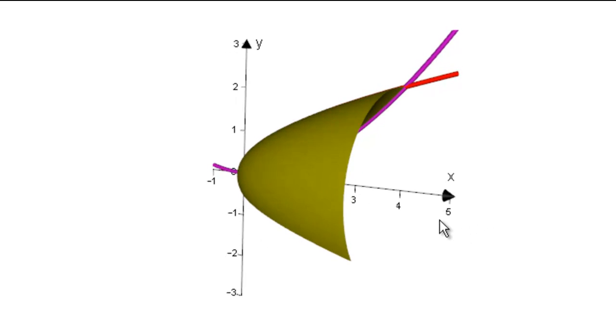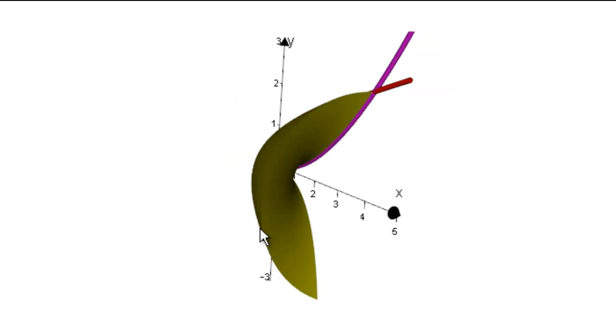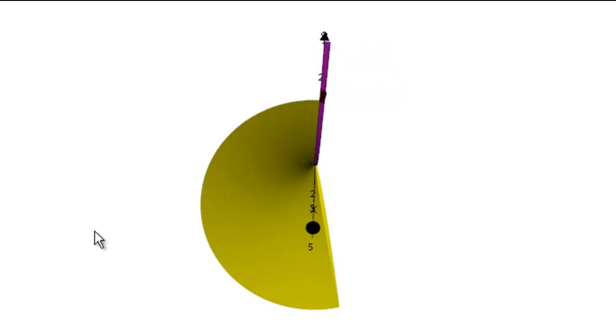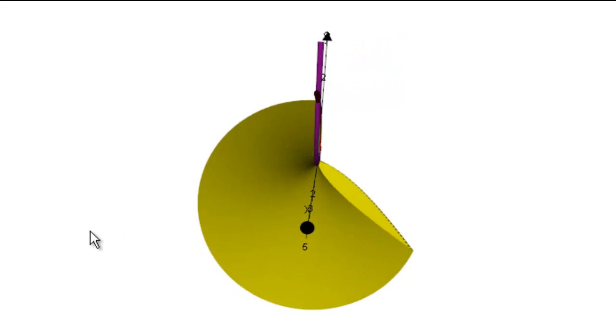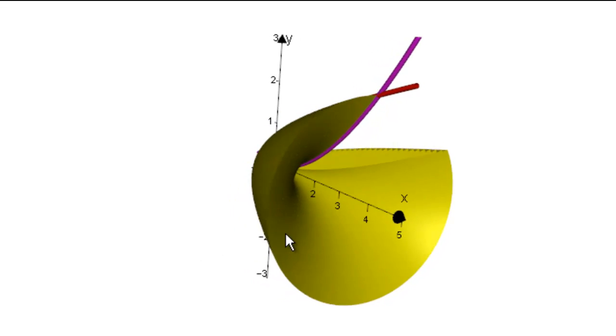What it does is it generates this particular volume of revolution. If I just turn it around a little you should be able to see the kind of thing that we're looking at.